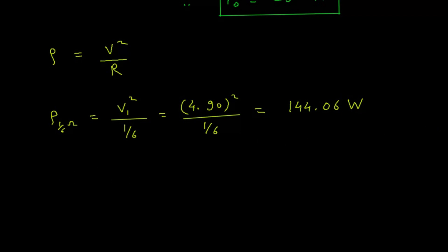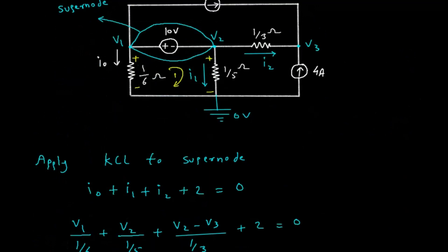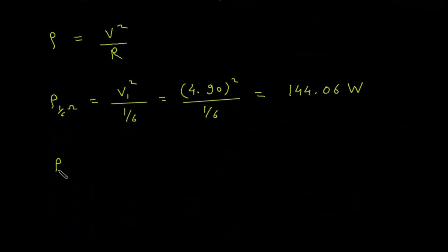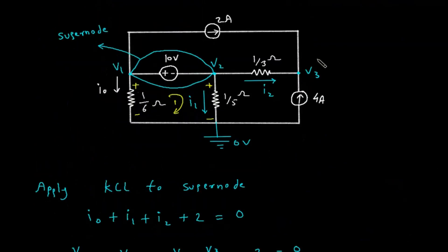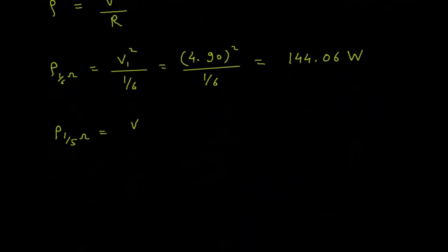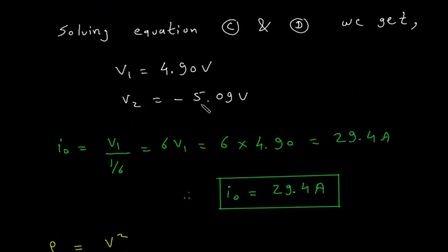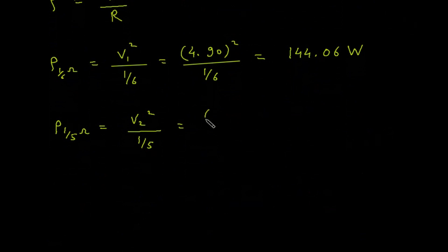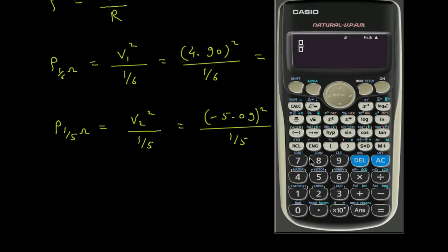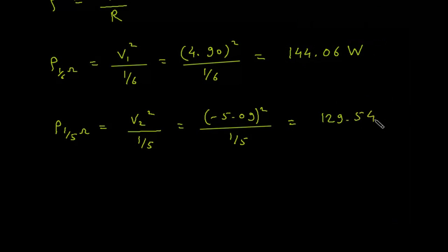Next we find P for the 1/5 Ohm resistor. The voltage across the 1/5 Ohm resistor is V2, so P(1/5 Ohm) equals V2 squared divided by 1/5. V2 is minus 5.09, so 5.09 squared divided by 1/5 gives 129.54 Watts.